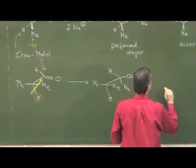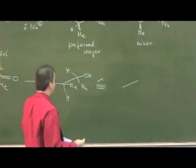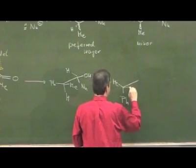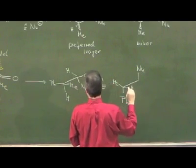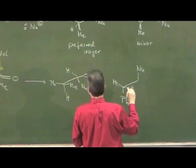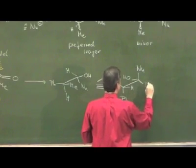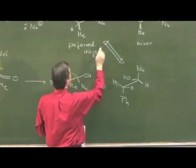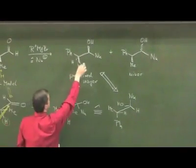And if I redraw this in the way that I'm placing phenyl and nucleophile now anti to each other, you should come to the conclusion that this is indeed the diastereomer being formed here, that this is identical to this representation.